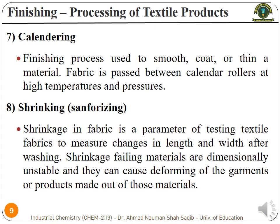Materials which pass shrinkage tests — in which they have the same shrinkage in both length and width — can be passed out from the fabric manufacturing process. Materials in which the shrinkage is not uniform dimensionally cannot be used for the manufacturing of garments because they will deform later after washing and cannot be used.